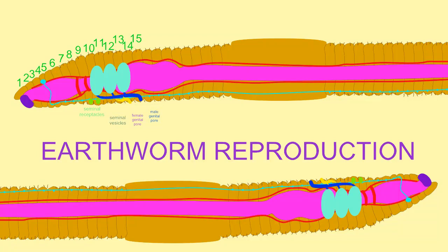Earthworms are hermaphroditic. Each earthworm possesses both testes, producing sperm, and ovaries, producing ova.